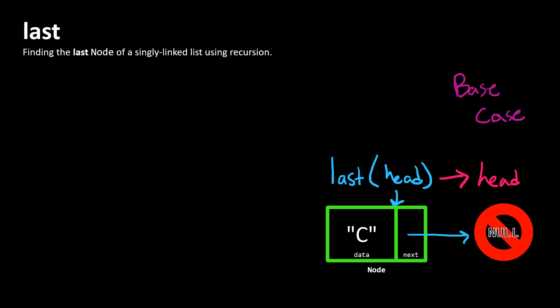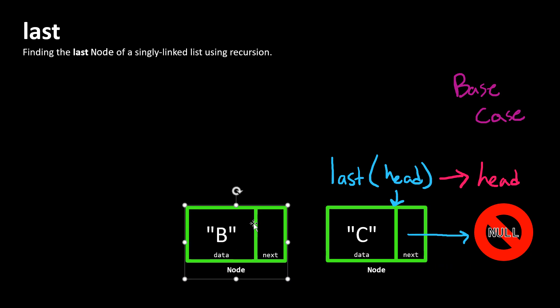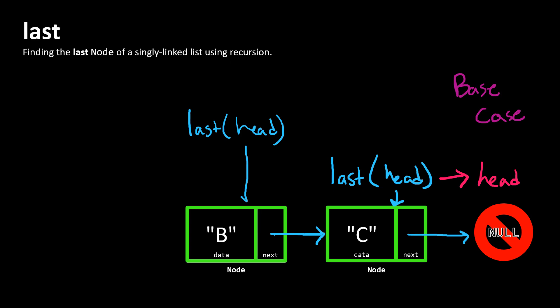Let's think about a slightly more complex case. What happens when we've got an additional node in our list — say, node B here? In this case, let's imagine that we're calling last, and our head node does not refer to C, it instead refers to B. Is this the last node? Is this the same as our base case? No, it's not, because we have a next property that refers to another node. So this isn't the last node of the list.